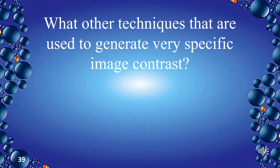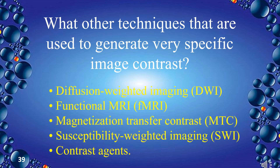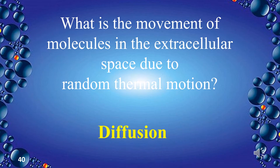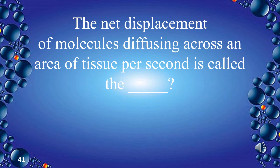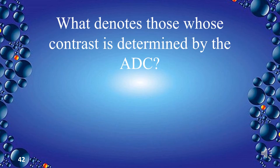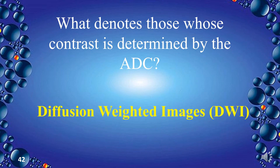Other techniques used to generate very specific image contrast include: diffusion weighted imaging (DWI), functional MRI, magnetization transfer contrast (MTC), susceptibility weighted imaging (SWI), and contrast agents. The movement of molecules in the extracellular space due to random thermal motion is called diffusion. The net displacement of molecules diffusing across an area of tissue per second is called the apparent diffusion coefficient (ADC). Images whose contrast is determined by the ADC are called diffusion weighted images (DWI).